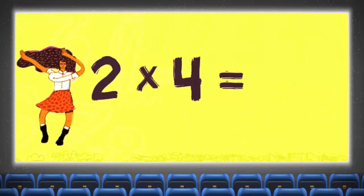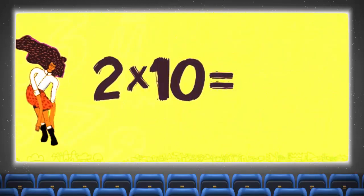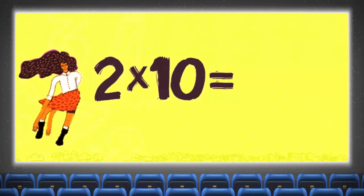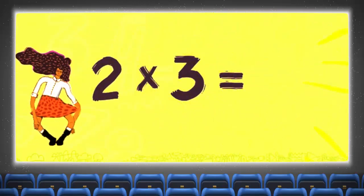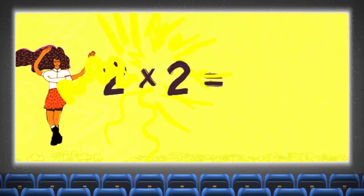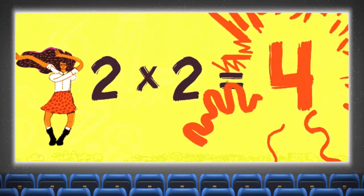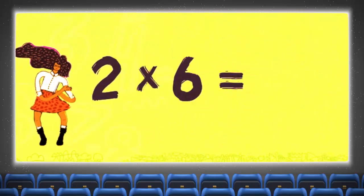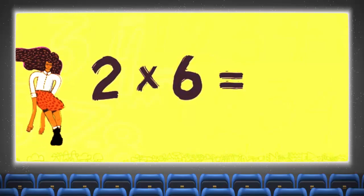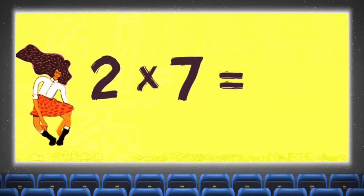And two times ten is twenty. Two times three is six. Two times two is four. Four, two times six is twelve. Two times seven is fourteen.